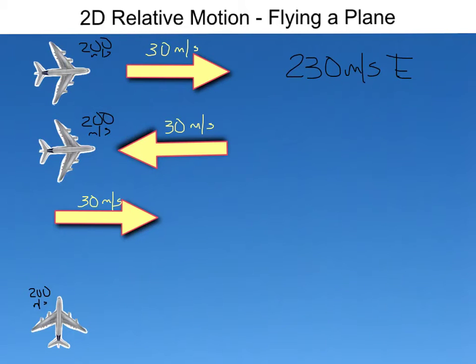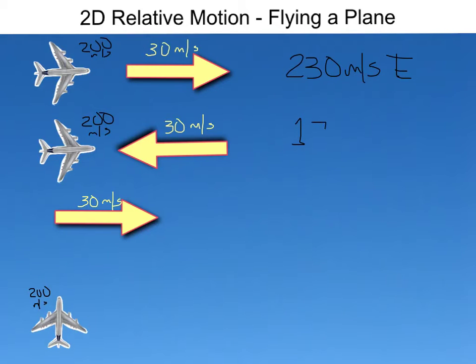But what if the airplane was encountering a headwind — that is, the wind was going against the motion of the aircraft? Here you could see 200 meters per second east plus 30 meters per second west would give us a different result: 170 meters per second, but still east. Not enough to overcome the velocity of the plane.